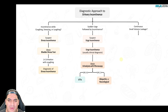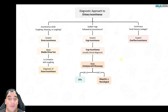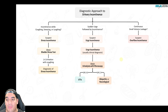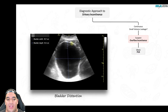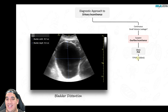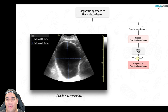For continuous small-volume dribbling, hesitancy, and inability to completely empty the bladder, overflow incontinence is likely. Have the patient void, then perform a post-void residual bladder scan — an ultrasound measuring remaining bladder volume after voiding. If the post-void residual is greater than 200 mL, it suggests retention, indicating either poor detrusor contraction or bladder outlet obstruction.